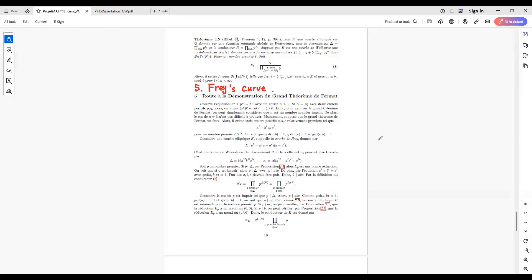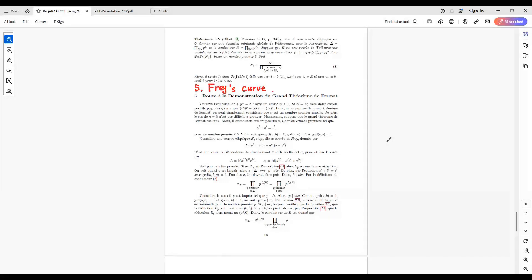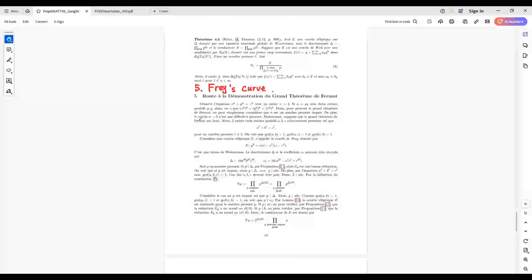I continue the topic of the proof of Fermat's Last Theorem. Part 5: Frey's Curve.